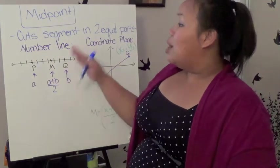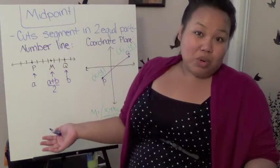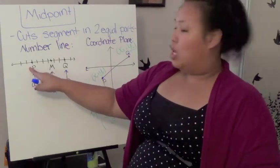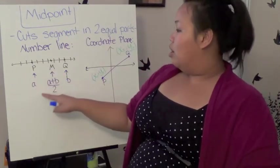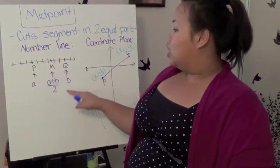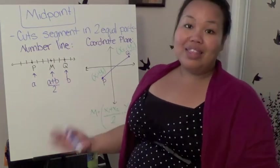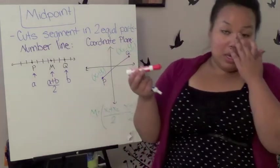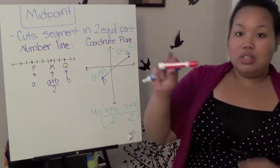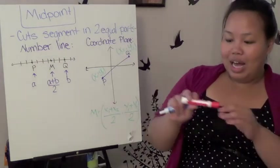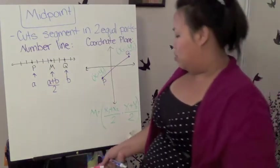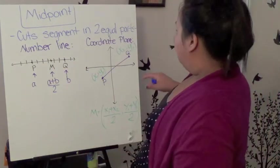And basically, in a number line, it's a little bit more simple than a coordinate plane. So for a number line, all I need to do is find the number of P, which, let's say, it's A, and the number of Q, let's say it's B. So I take those two, add it, and then just divide it. So basically, if this was maybe 6 inches, I would take that, take 6, and then divide it by 2, right? Because I'd add them together, 6 divided by 2.